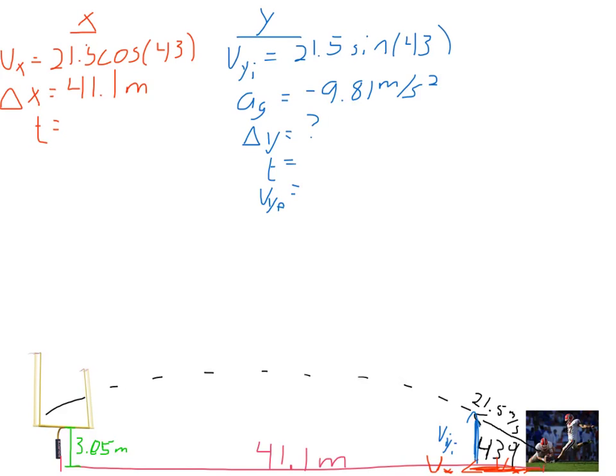All right, so I went ahead and I filled in everything else that we know and what else we're looking for, right? We know delta X, 41.1 meters. We do not know time. In the Y axis, here's the initial velocity again, the acceleration of gravity. Notice the negative, because we're calling down negative and up positive, right? The ball was initially going upwards.